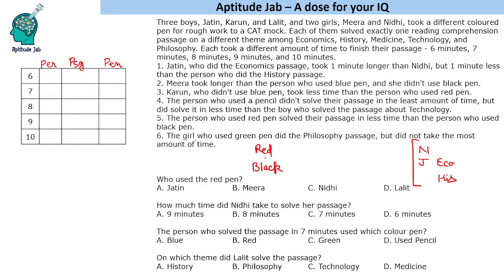Now: the girl who used the green pen did the philosophy passage but did not take the most amount of time. This becomes easier because there are only two girls — Mira and Nidhi — whereas if it said 'boy' we would have three cases. So this girl is either Mira or Nidhi. Let us take Mira's case first.